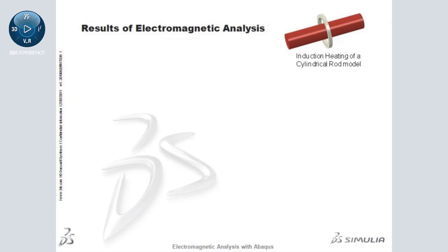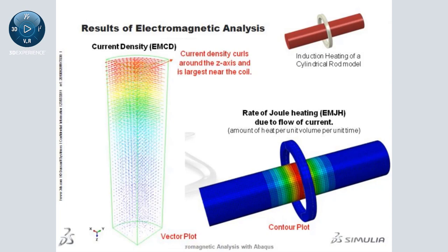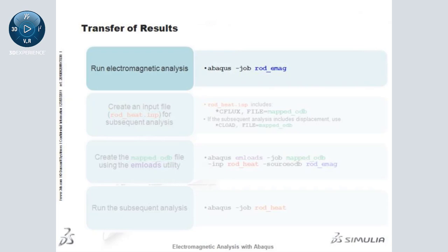Now I will show you some result plots generated in the Abaqus CAE visualization module. Here is a vector plot of the real part of the induced current. You can see that the current is curling around the z-axis and is largest in the portion of the rod nearest the coil. Here is a contour plot of the rate of joule heating generated in the rod due to the induced current. The heat generation is largest at the center of the rod due to its proximity to the coil. To run a sequentially coupled thermal-displacement analysis, first run the electromagnetic analysis, then prepare an input file for the subsequent heat transfer analysis.